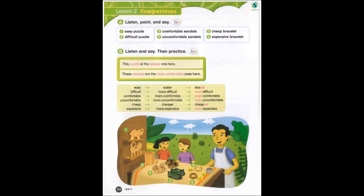One: This puzzle is the easiest one here. Two: This puzzle is the most difficult one here. Three: These sandals are the most comfortable ones here. Four: These sandals are the most uncomfortable ones here. Five: This bracelet is the cheapest one here. Six: This bracelet is the most expensive one here.